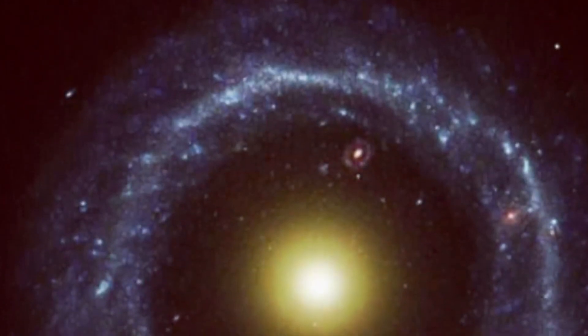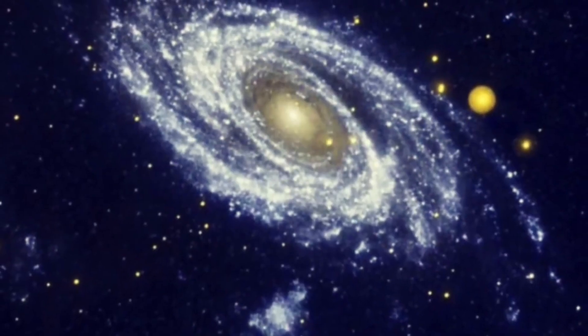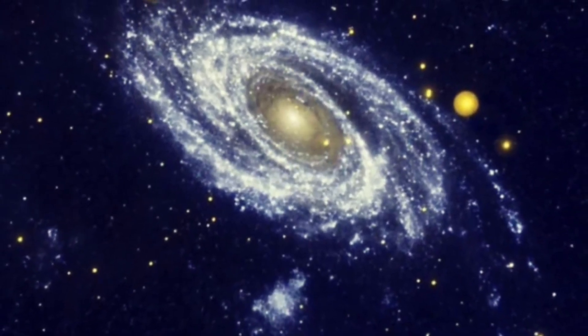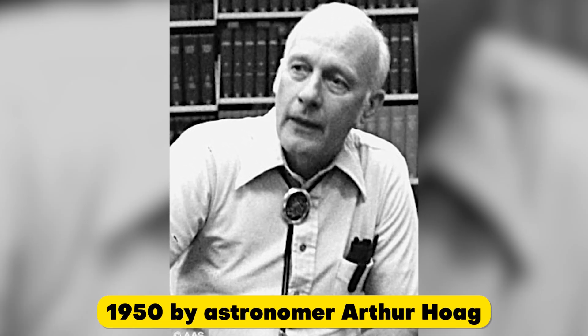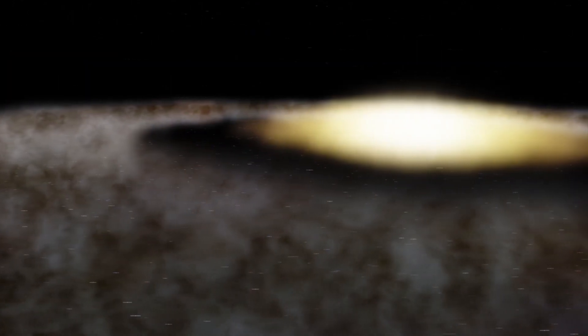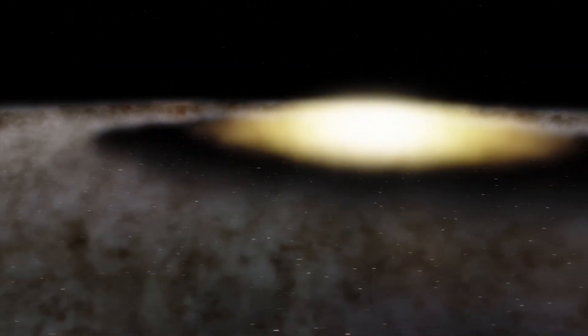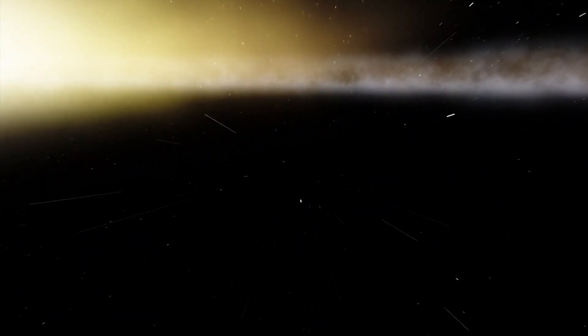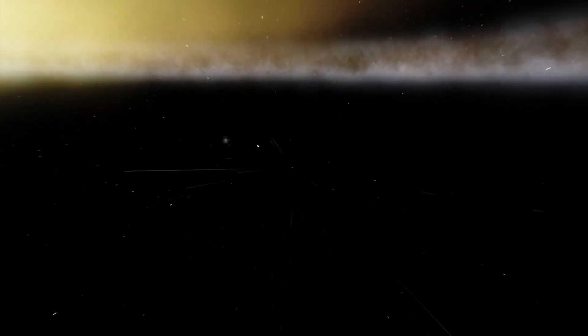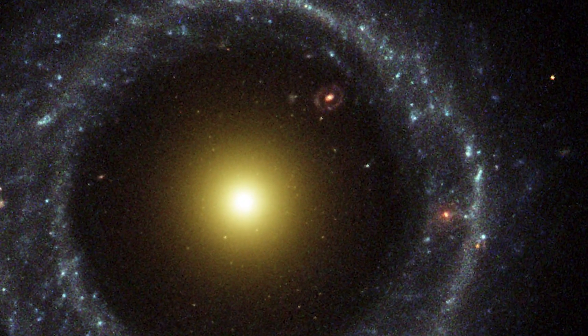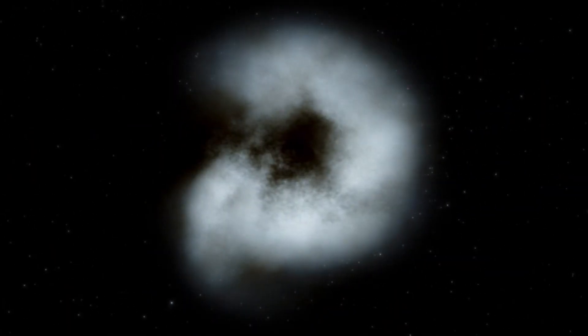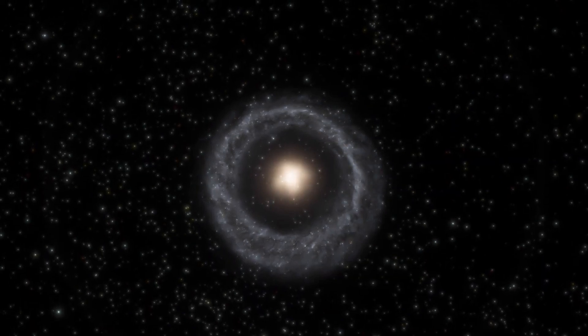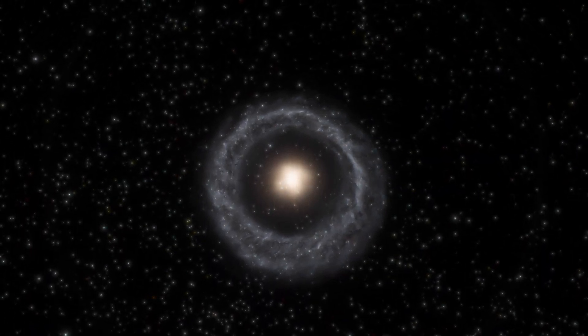The Hoag's Object is located in the constellation Serpens, and is approximately 600 million light-years away from Earth. It was discovered in 1950 by astronomer Arthur Hoag, and since then, it has remained a subject of intense study by astronomers. The unique structure of this galaxy has led many scientists to speculate about the processes that could have led to its formation. One theory is that a smaller galaxy collided with Hoag's object, causing a shockwave that triggered the formation of the ring.